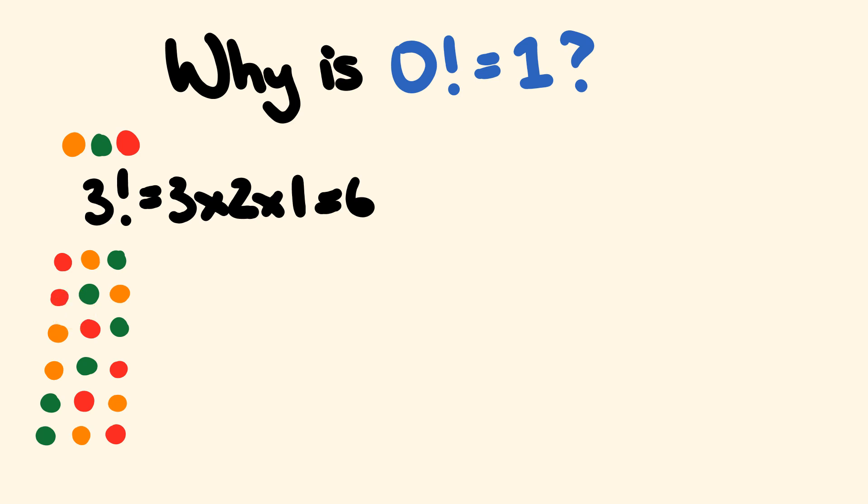So, nice and easy. What about if we had two things that we were selecting? Say we only had a red one and a green one here. Well, no surprise to think that this is two factorial. Two factorial, which is equal to two times one, so that's equal to two.